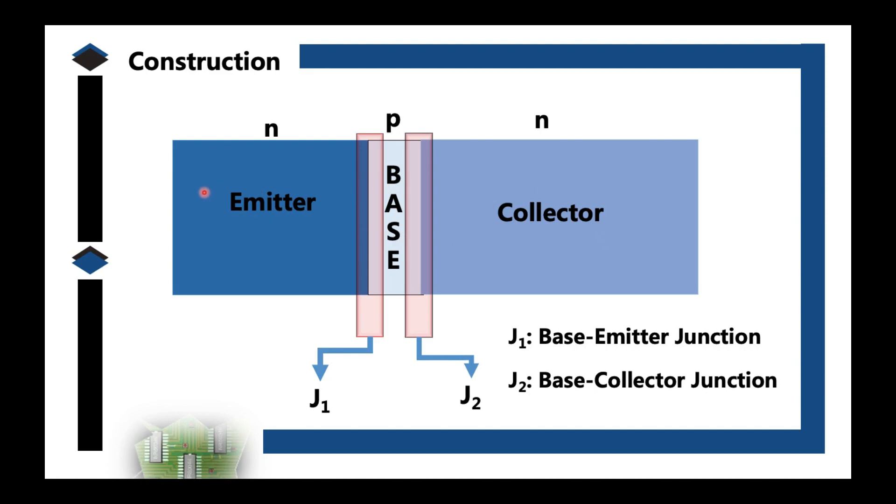We'll call this junction one and junction two. At the same time, for a diode, the P-type is called the anode and the N-type is called the cathode. For BJT, we'll name these layers or regions the emitter, base, and collector. Notice also their sizes and color gradients.